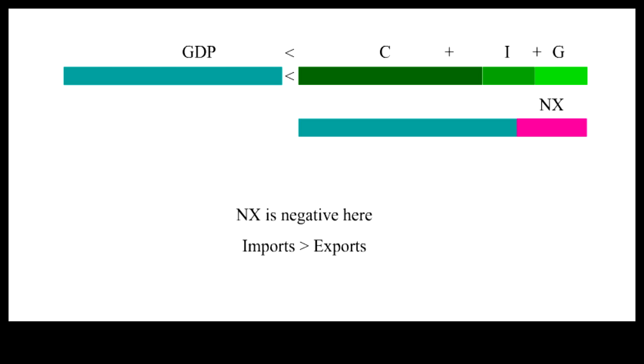When negative exports are subtracted from domestic expenditures, the total would equal the gross domestic product.